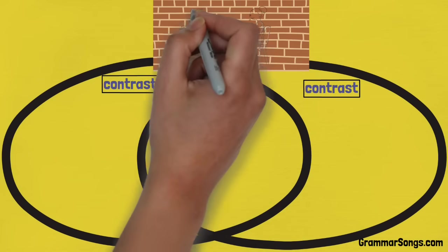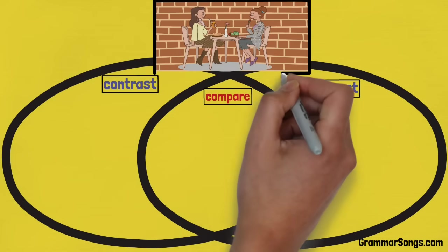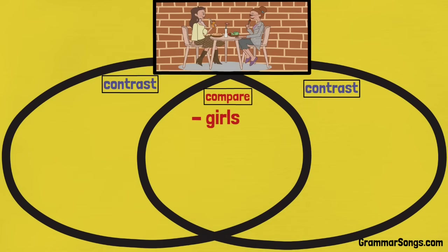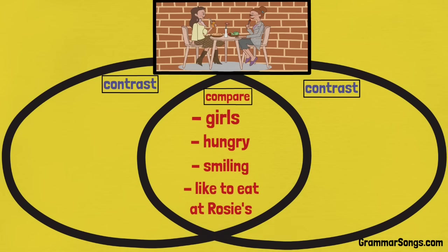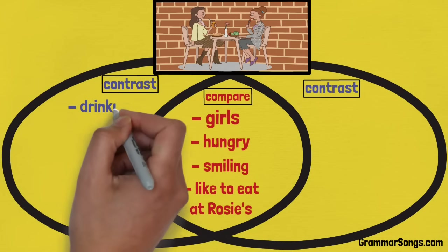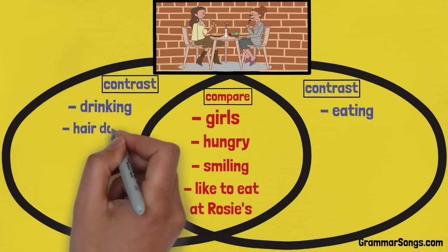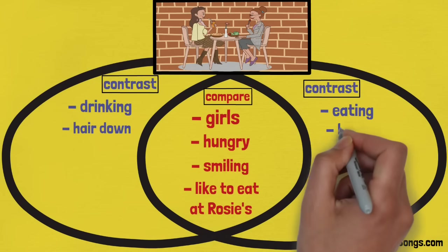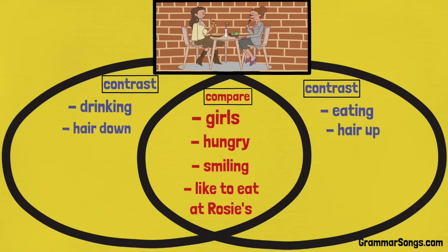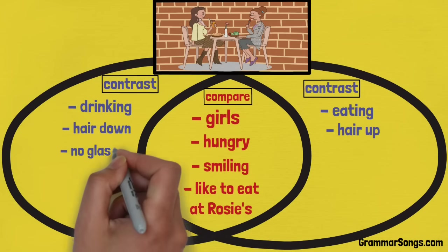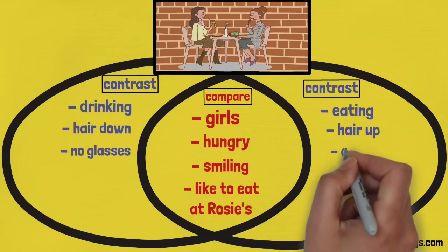So if we were comparing the two diners at Rosie's, they are both girls, they are hungry, they are smiling, and they both like to eat at Rosie's. If we contrast the two diners, the girl on the left is drinking while the girl on the right is eating. The girl on the left has her hair down, while the girl on the right has her hair up.